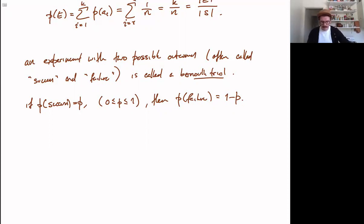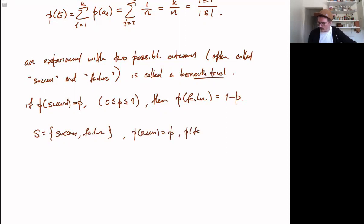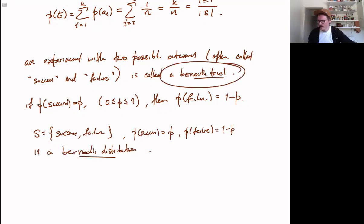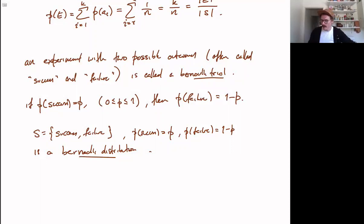So here already is a new example of a distribution. S equals {success, failure}. Probability of success equals P, probability of failure equals 1 minus P — this is a Bernoulli distribution. I will usually call them Bernoulli trials, probably because we are using them to build up more complicated distributions. But you can think of this by itself as being a little example of a distribution.